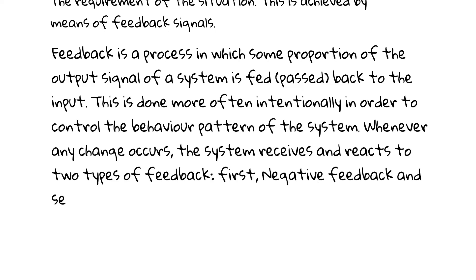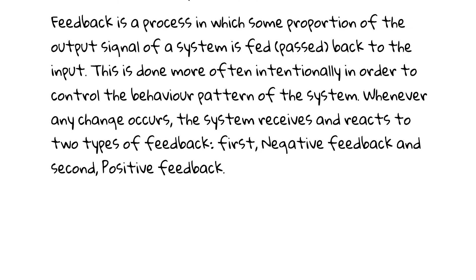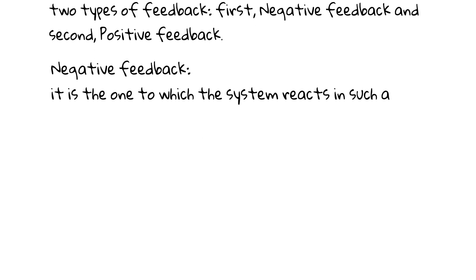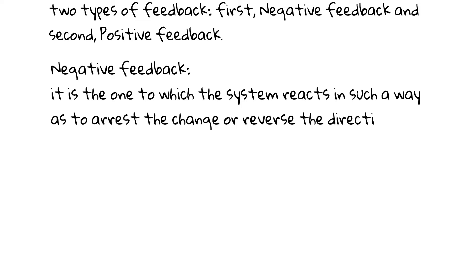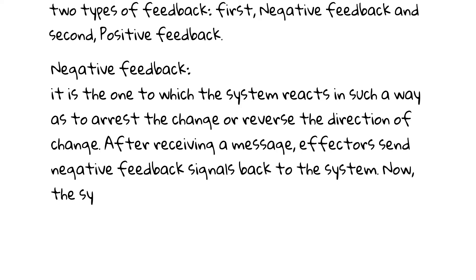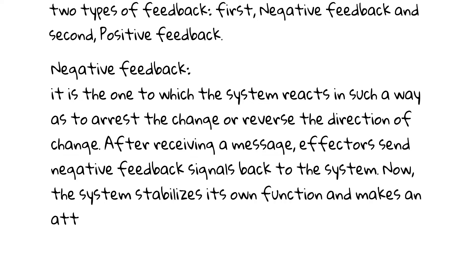The two types are: first, negative feedback, and second, positive feedback. Negative feedback is the one to which the system reacts in such a way as to arrest the change or reverse the direction of change. After receiving a message, effectors send negative feedback signals back to the system, and the system stabilizes its own function and makes an attempt to maintain homeostasis.